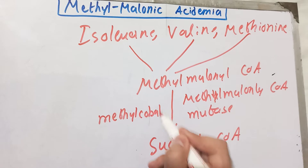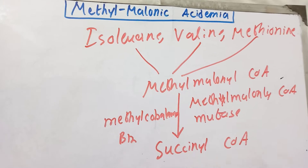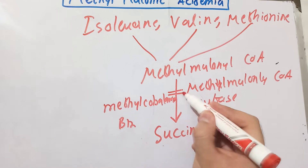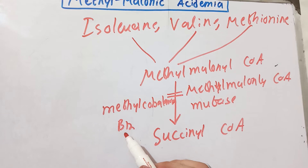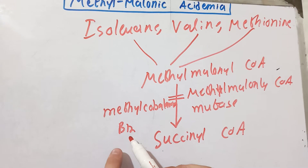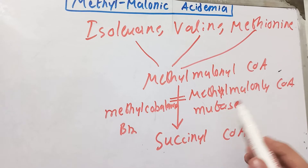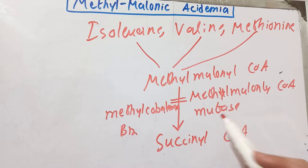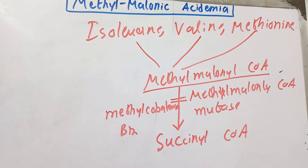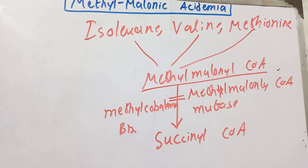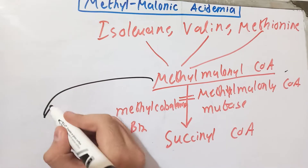This reaction uses the methylcobalamin form of vitamin B12. When this reaction is stopped — either due to deficiency of vitamin B12 in the body or due to deficiency of the methylmalonyl coenzyme A mutase enzyme — methylmalonic acid will start accumulating, leading to methylmalonic acidemia.